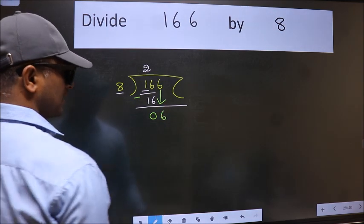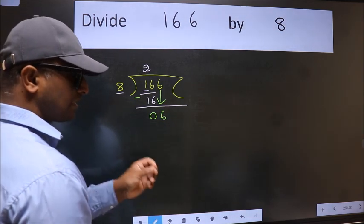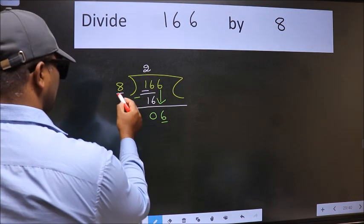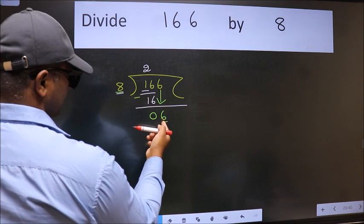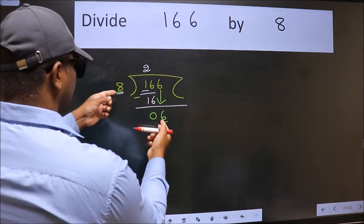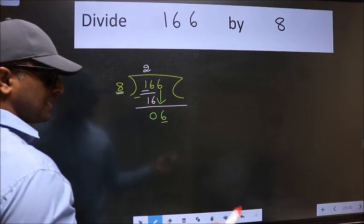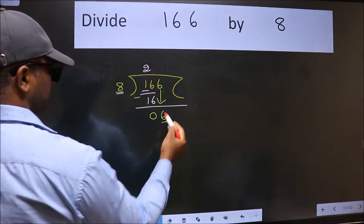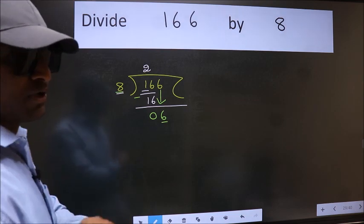After this step, the mistake happens. Here we have 6 and here 8. 6 is smaller than 8. So what many do is, they directly put dot, take 0. Which is wrong.